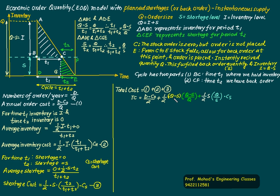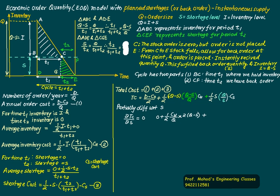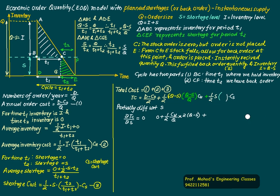This equation has two variables, Q and S. We differentiate first with respect to S. Note a correction: the shortage cost term should use S/Q, not Q/S. Taking the partial derivative with respect to S and setting it to zero, we get CS equals Q times CH divided by (CH plus CS), which gives the optimal shortage level S.